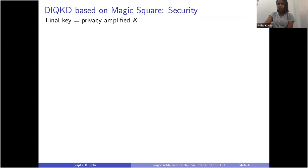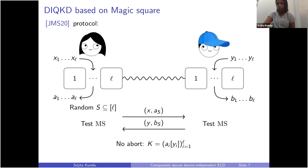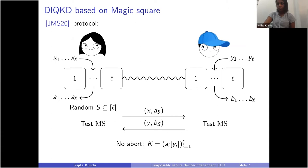For the final key, we need to do some privacy amplification on the raw key. For this, there's something called the leftover hashing lemma that we use. The quantity of interest is the min-entropy of the raw key conditioned on a third-party eavesdropper Eve's quantum system and Alice and Bob's inputs X and Y, which have been revealed to the eavesdropper because they were communicated over a public channel.